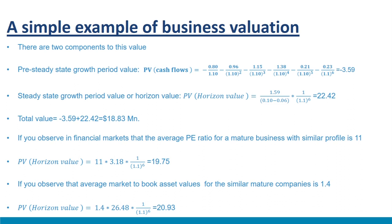Let us value these two components. Pre-steady-state growth period: present value of cash flows = −0.8/1.10 − 0.96/1.10² − 1.15/1.10³ and so on through −0.23/1.10⁶ = −$3.59. Steady-state growth period horizon value: present value = [1.59/(0.10−0.06)] × 1/1.10⁶ = $22.42. Total business value = −3.59 + 22.42 = $18.83 million.